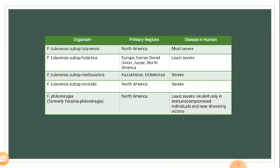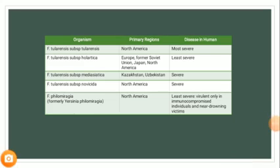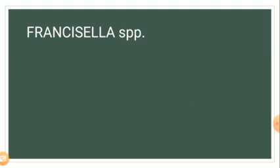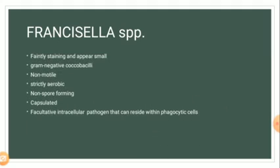Philomiragia is the least virulent and is only dangerous in immunocompromised individuals and near-drowning victims. Now let's proceed to the general characteristics of Francisella species.